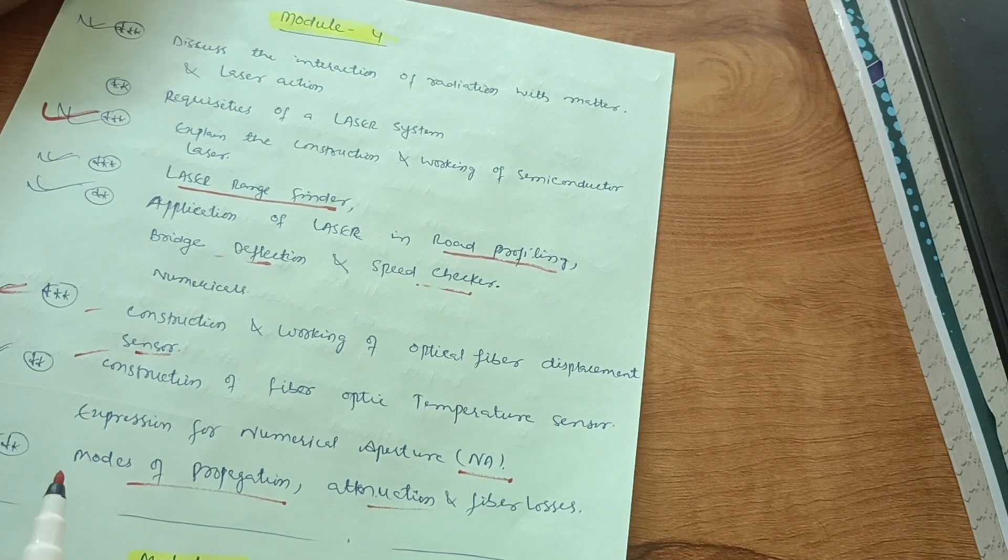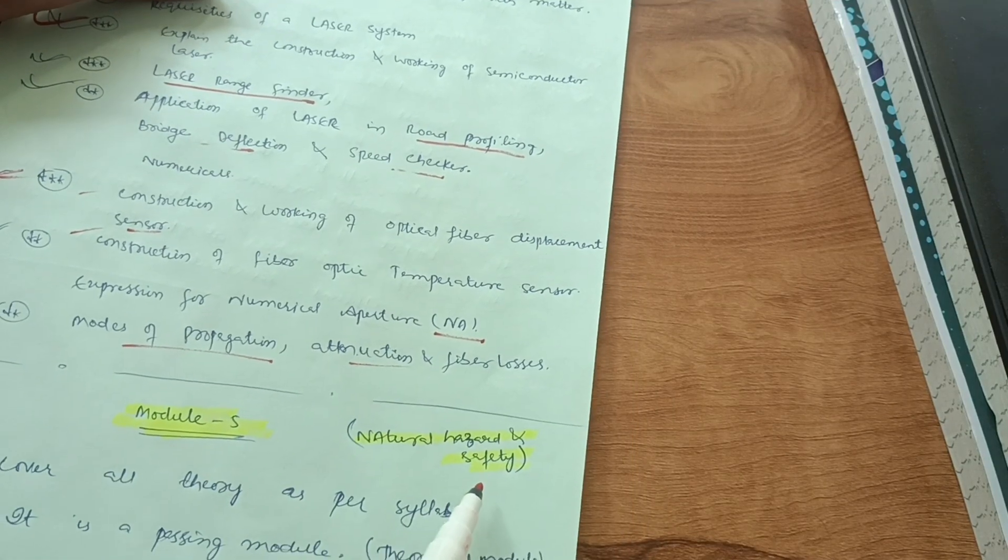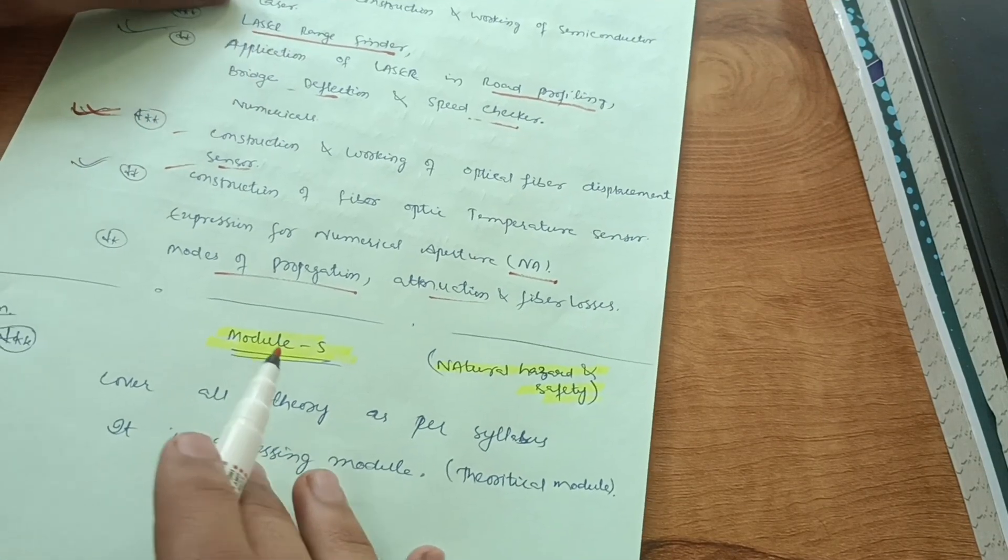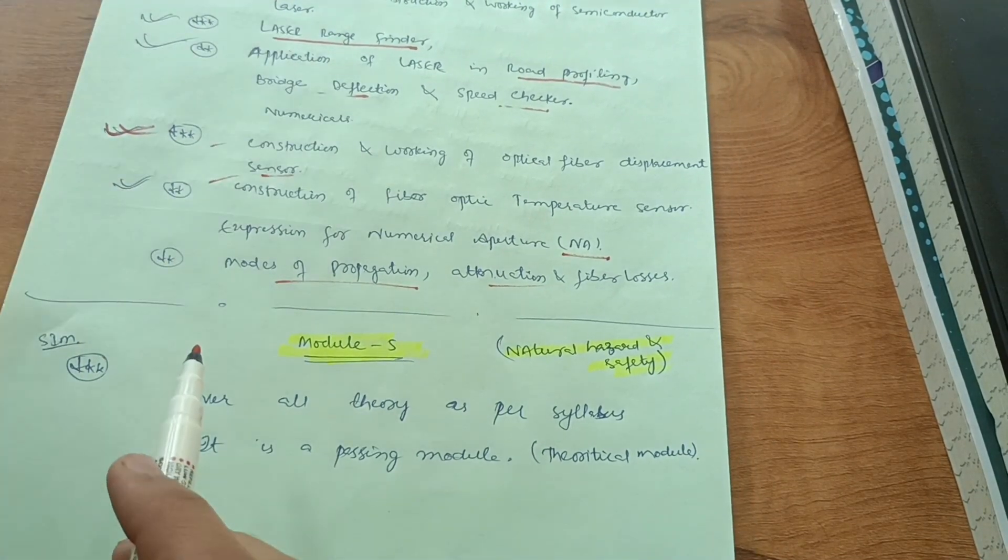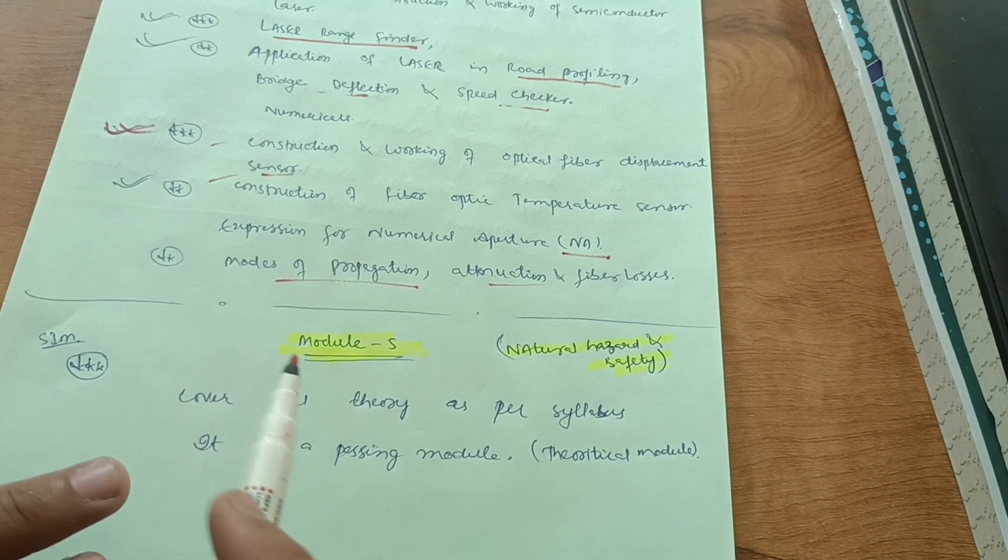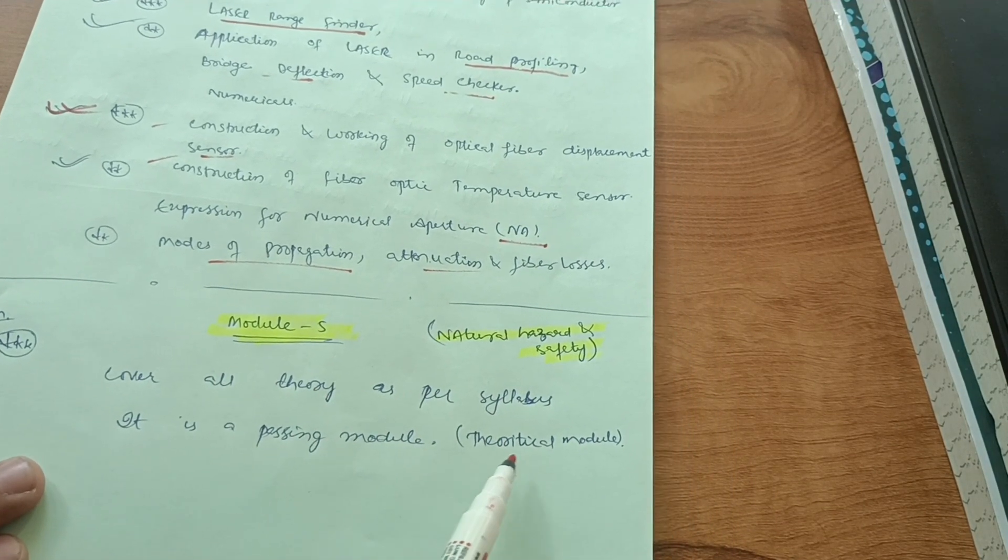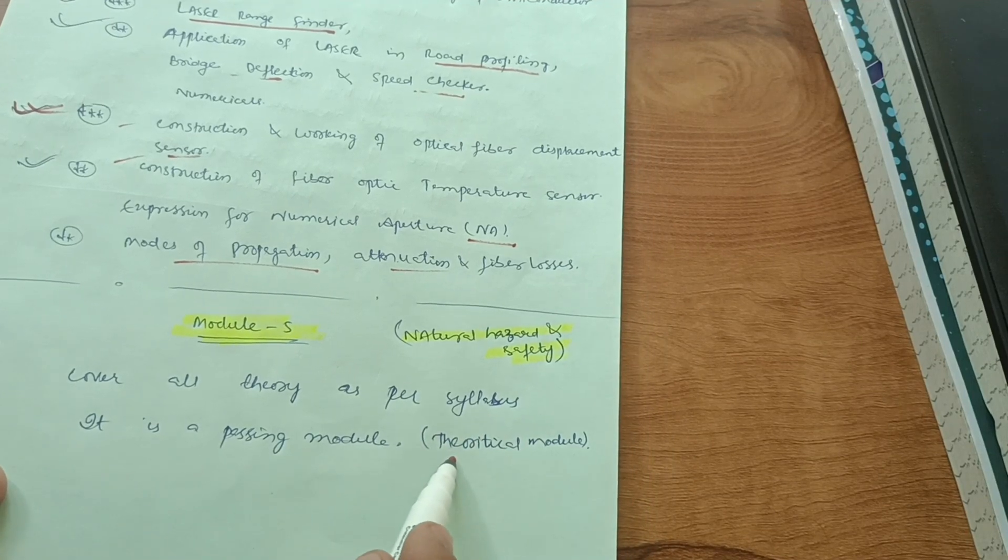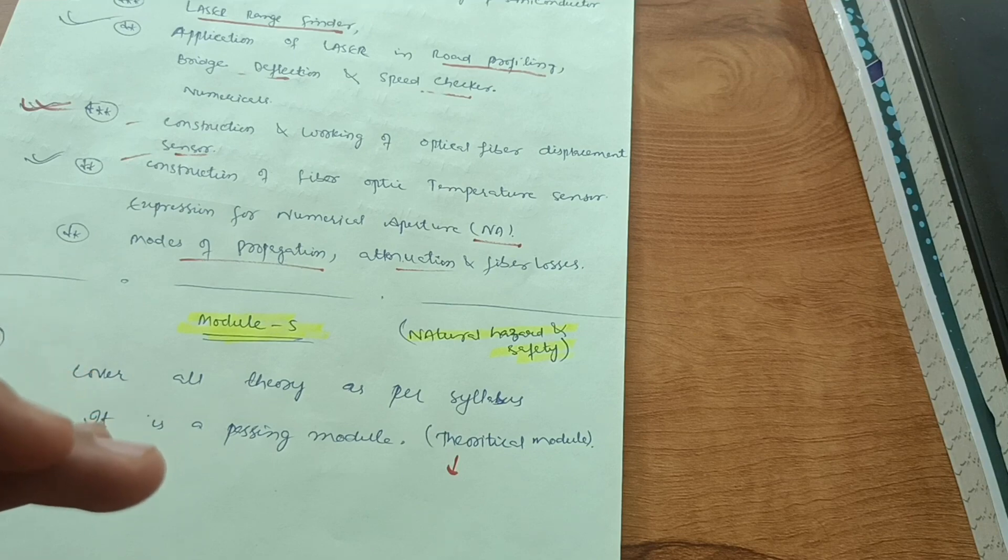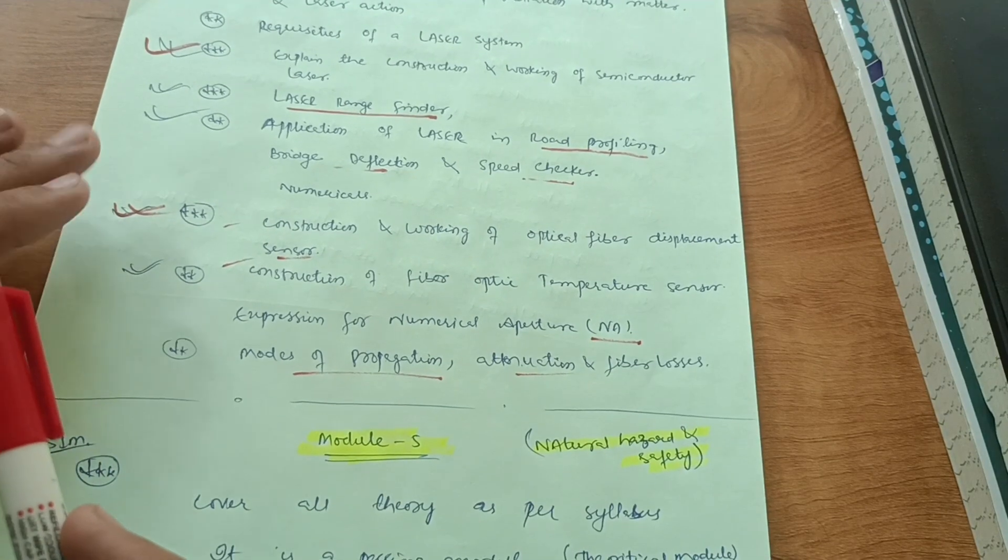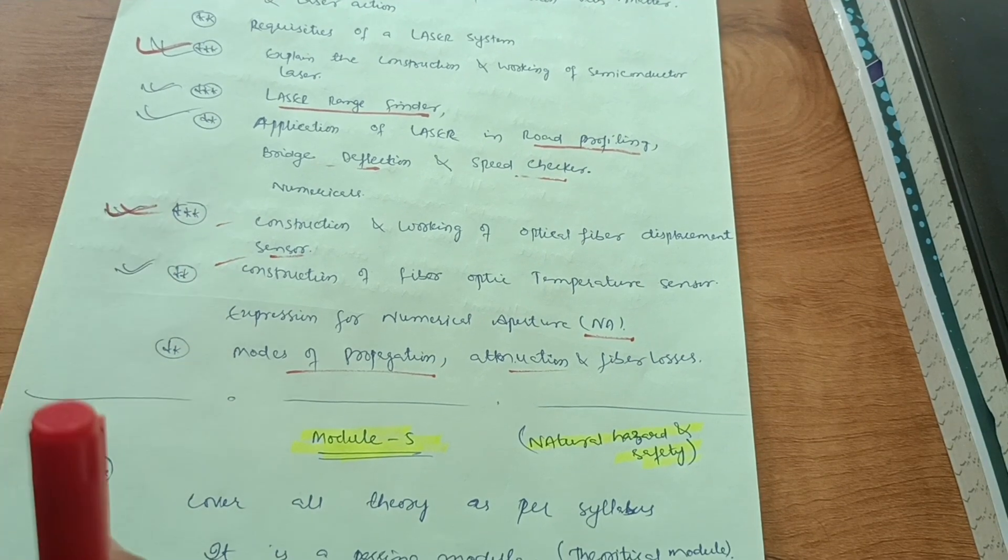Module fifth which is natural hazard and safety is a full theoretical concept. My dear friends, I have written here super important module which you shouldn't leave as it is a theoretical module. Cover all theory as per syllabus, it is a passing module, theoretical module. If you just refer model question papers, try to cover those theoretical concepts which are in the model question paper and according to the syllabus. This much content is enough to cover this particular subject.